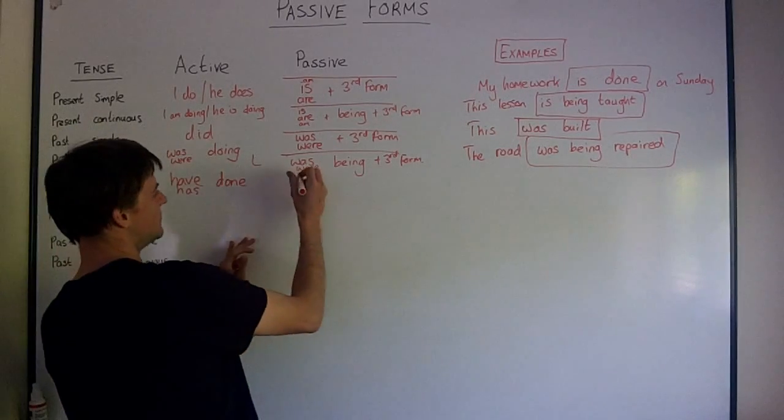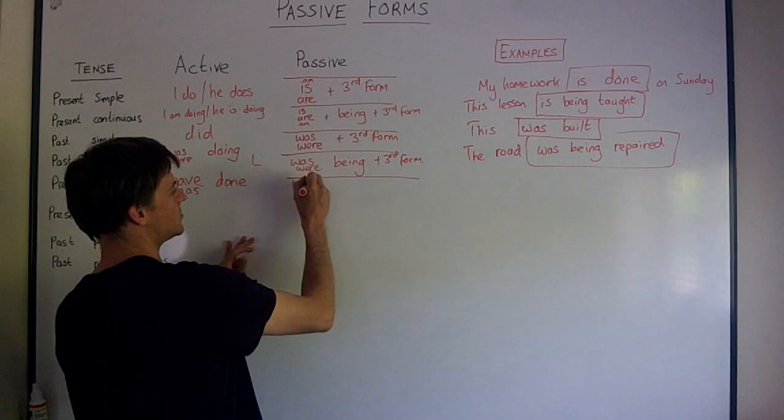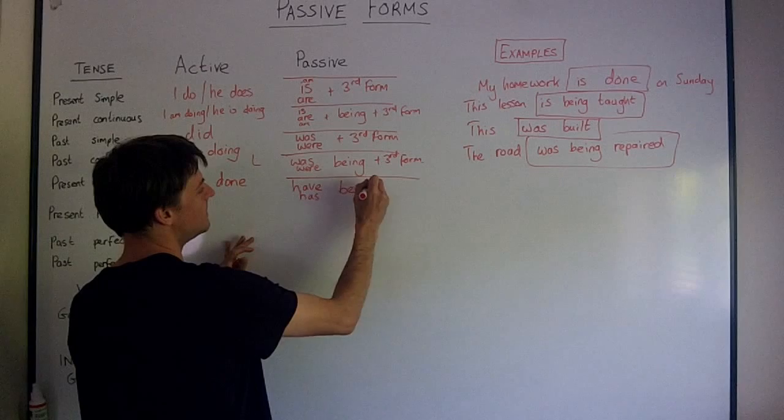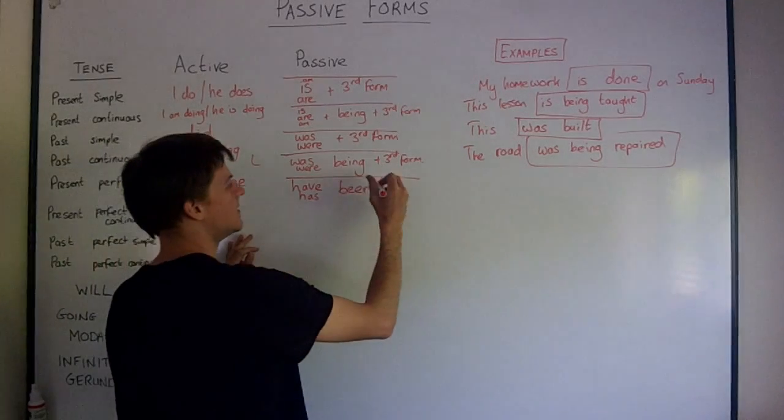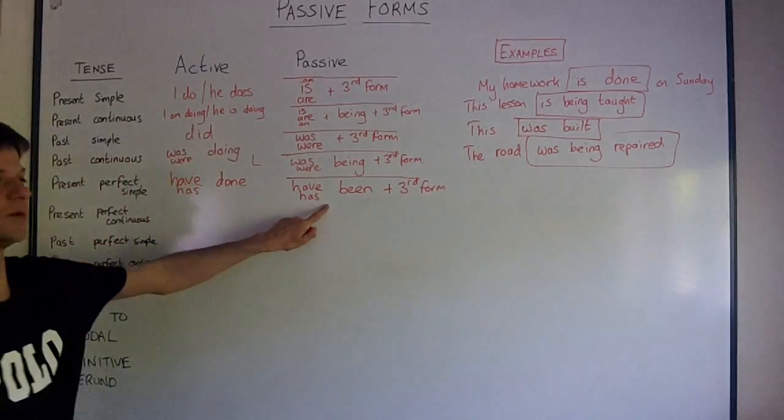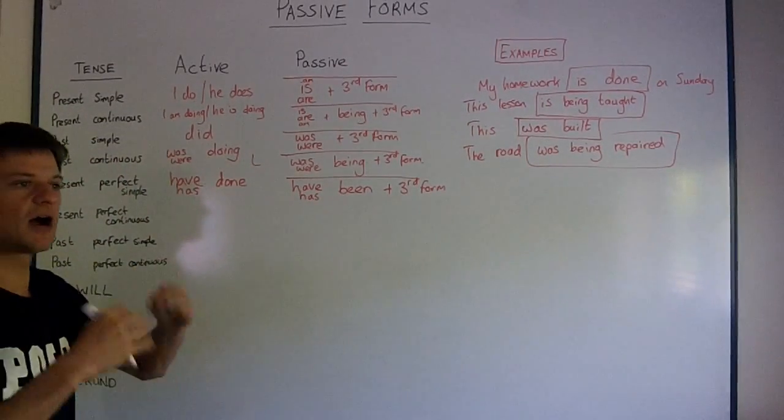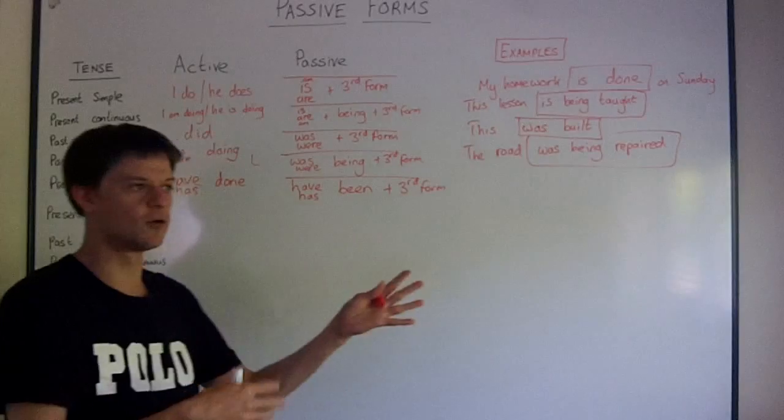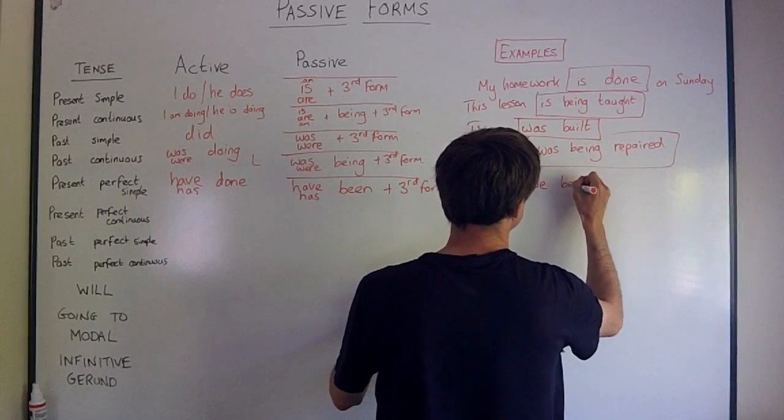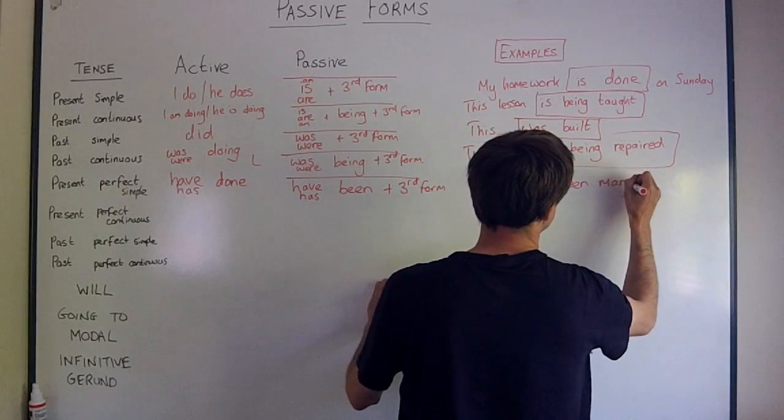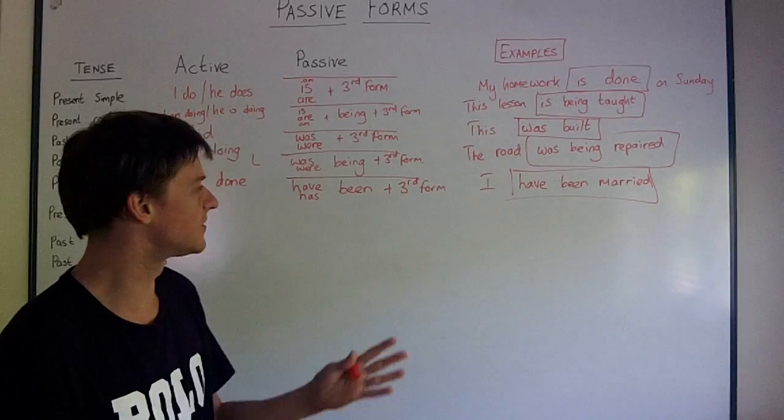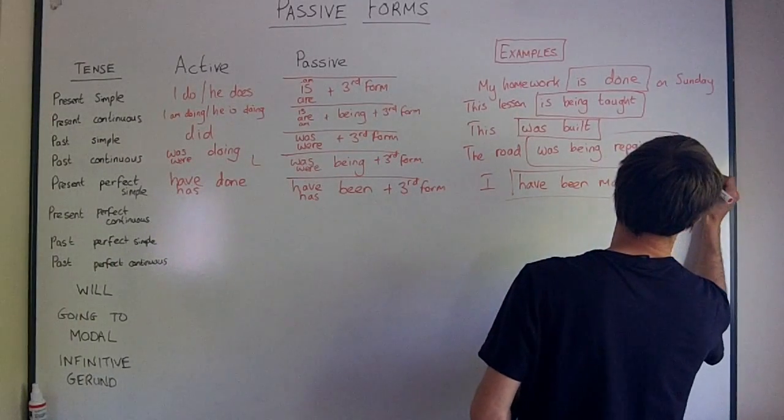However, in passive, it's very logical. All of these passive forms are logical. Have or has been, not being, been, plus third form. So a very common situation when you use this is marriage. I have been married for three years. I have been married for three years. I am still married. That's why we use present perfect, but I have been married for three years.